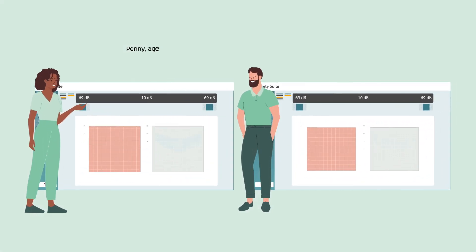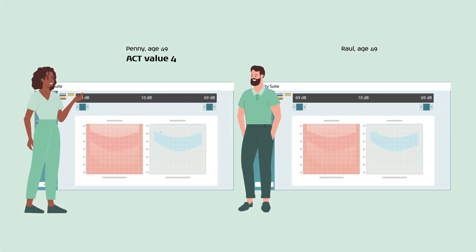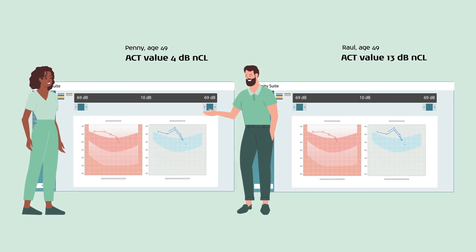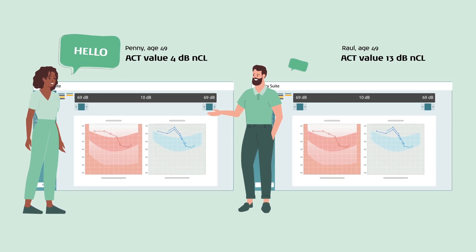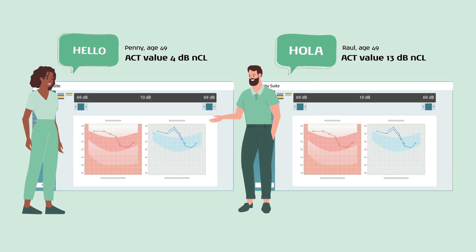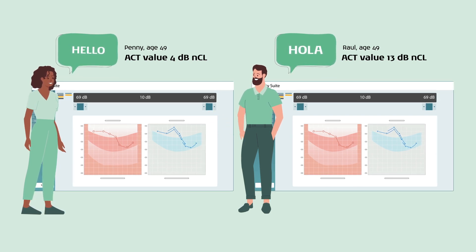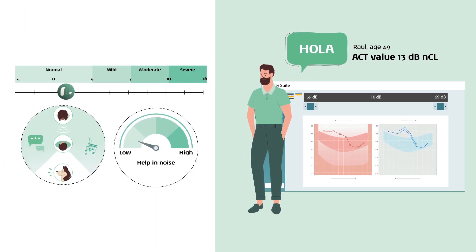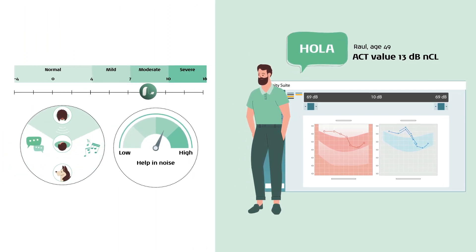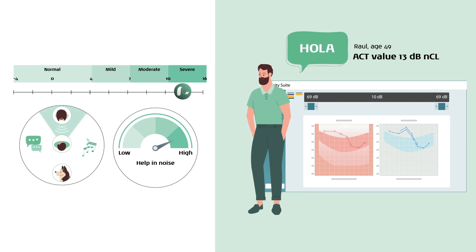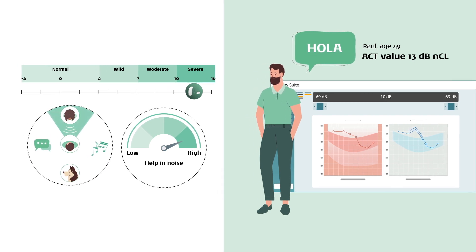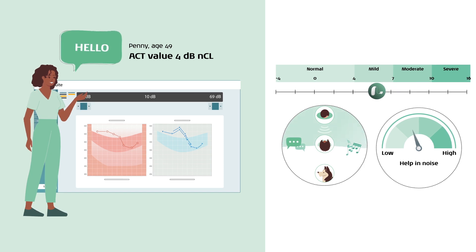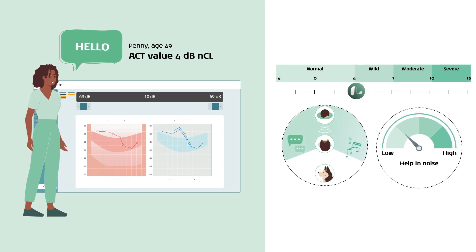To illustrate this, let's meet two individuals who arrive at a hearing aid clinic with the same pure tone audiogram: Penny and Raul. Penny speaks English and Raul speaks Spanish. ACT allows both individuals to be assessed using the same test. The results show that Raul has a high ACT value — he needs lots of contrast to hear the difference in the signals. Penny, on the other hand, has a low ACT value — she needs very little contrast to hear the difference in the signals.